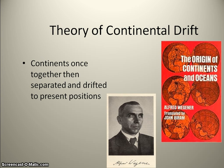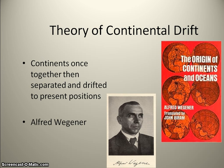In our last unit, or the last module, we saw that Alfred Wegener put together this idea that all of the continents at one time were all together, and then they drifted to their current positions that we see them in today. He wrote this long and very detailed book about his theories called The Origin of Continents and Oceans, and basically he outlined what he thought continental drift to be in this book.